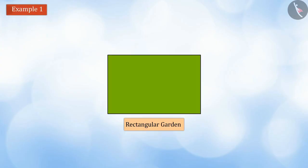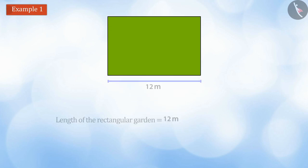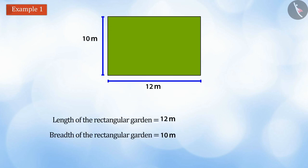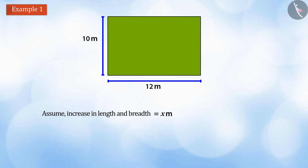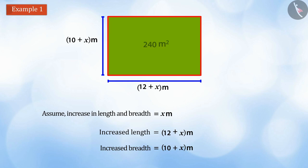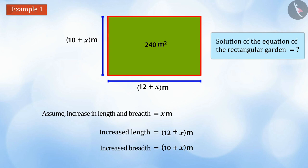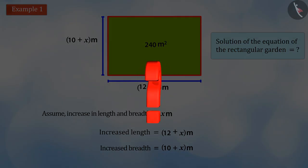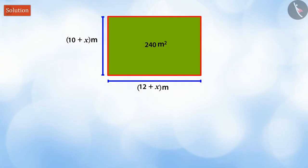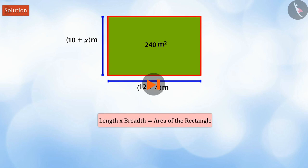A rectangular garden is 12 meters in length and 10 meters in width. If all of its dimensions are increased by equal number, the total area of the garden becomes 240 square meters. Find the solution of the equation of the rectangular garden. Can you find the equation of the garden? Pause the video here and find out the equation of the garden.